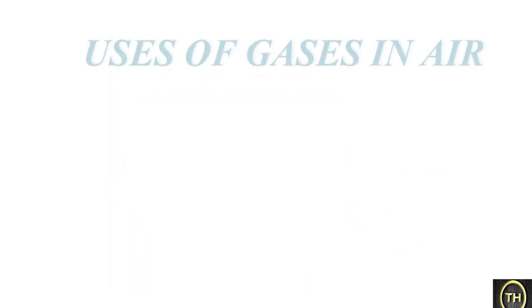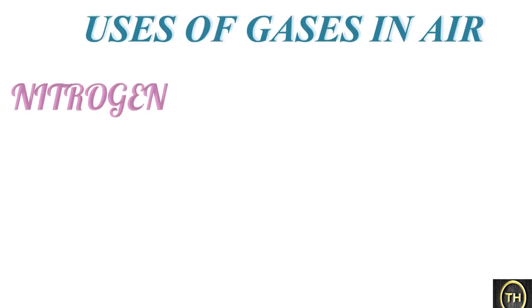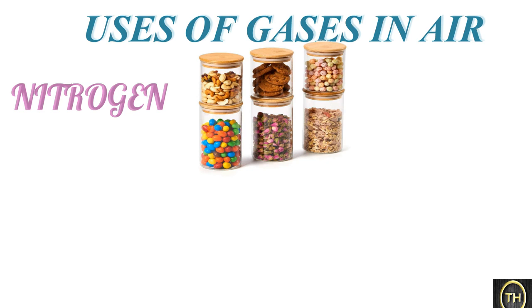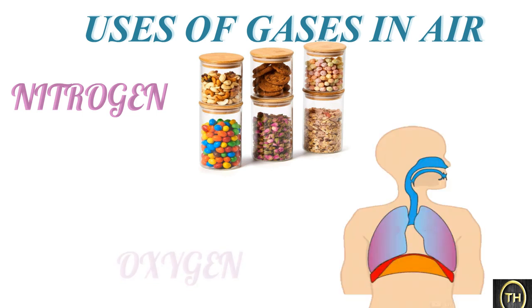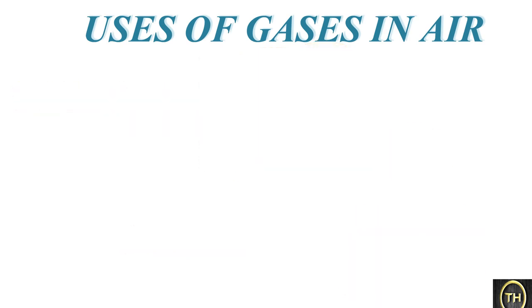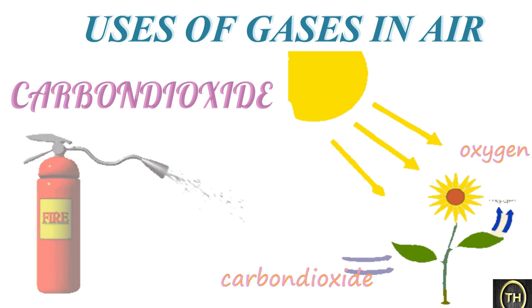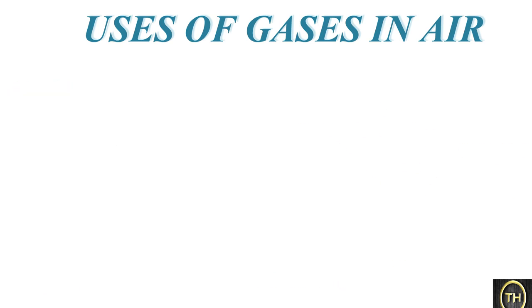Now let us learn some uses of gases in air. Nitrogen: it helps living things to build the necessary proteins, and is useful in the production of ammonia and in airtight packaging of foodstuffs. Oxygen: necessary for respiration in living things and for combustion. Carbon dioxide: plants use it for producing their food and it is used in fire extinguishers. Argon: it is used in electric bulbs.